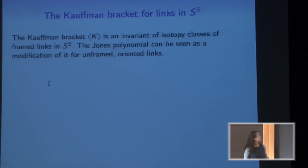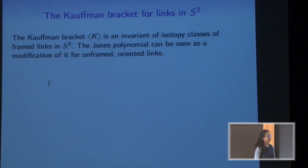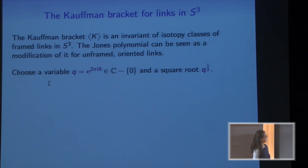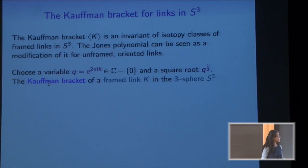To start, let's define the Kauffman bracket. It's an invariant of isotopy classes of framed links in S³, and it's a reformulation of Jones' original construction — a quick change of variable gives you back the original Jones polynomial. It's a polynomial in a variable Q, which Francis tells me I should call e^{2πiħ}, where ħ is Planck's constant. Usually Q is some kind of root of unity. We substitute it for a root of unity and also take a square root.